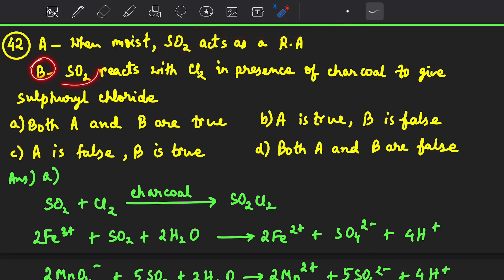Statement B is SO2 reacts with chlorine in presence of charcoal which acts as catalyst to give sulfuril chloride. So this statement is true. This statement is also true.